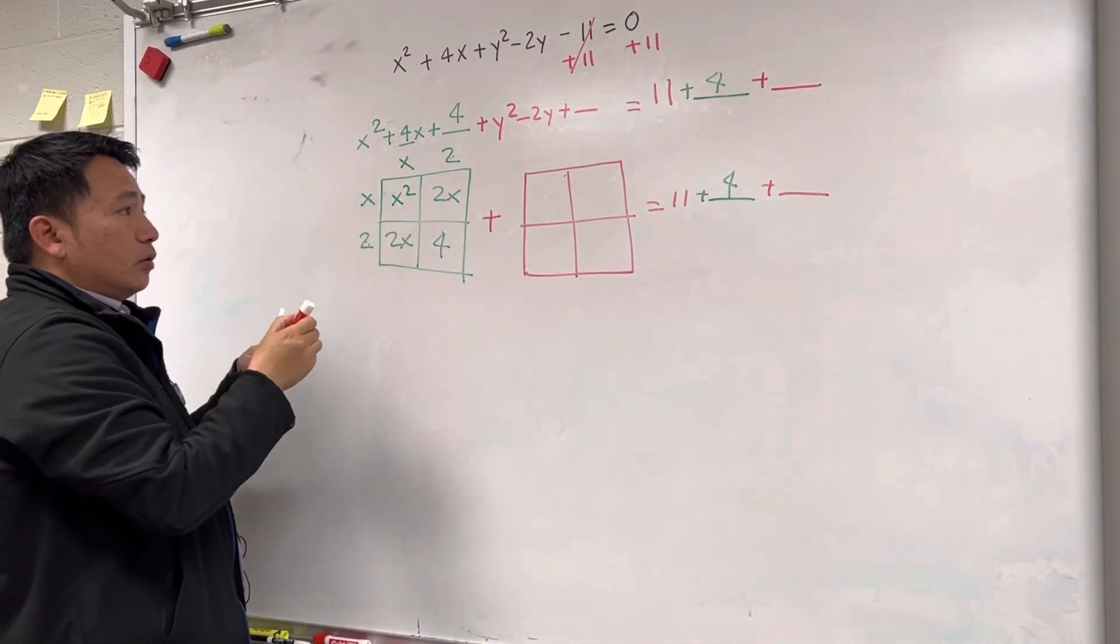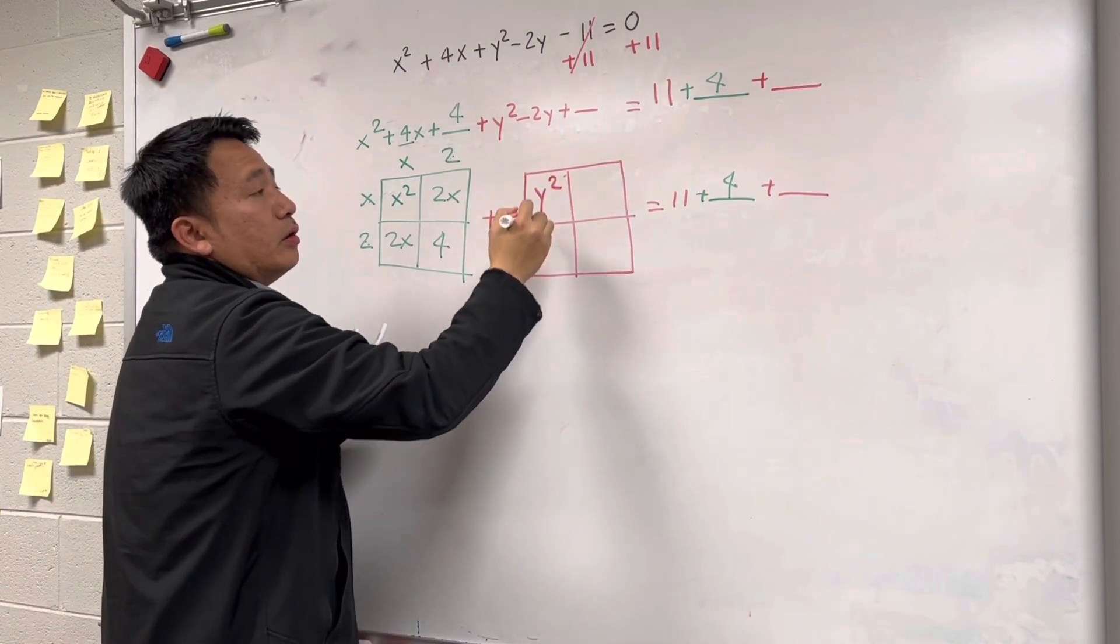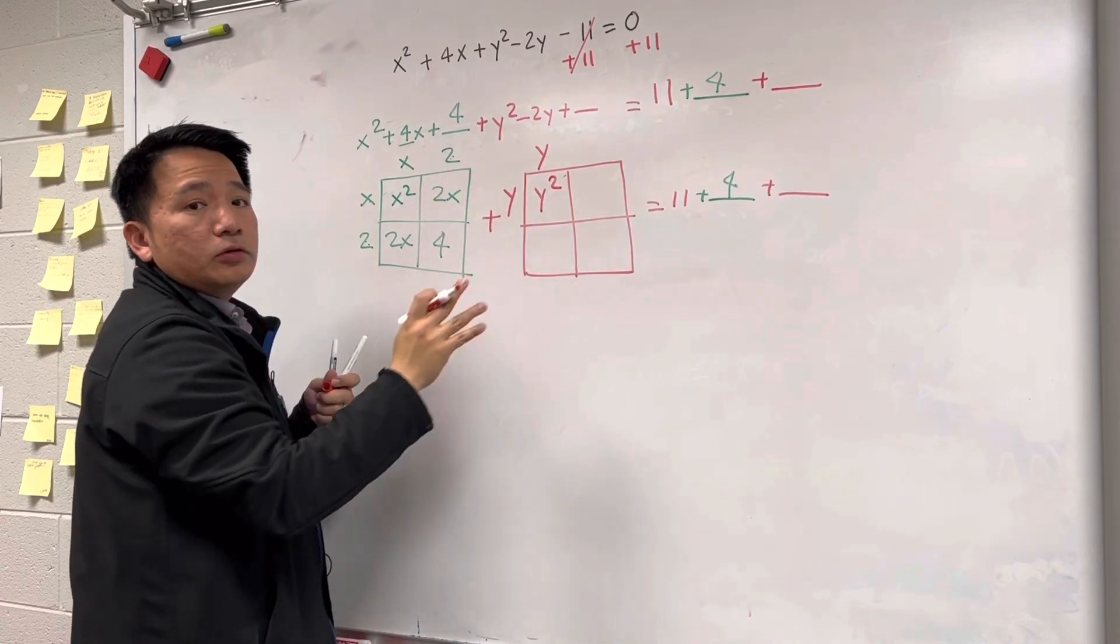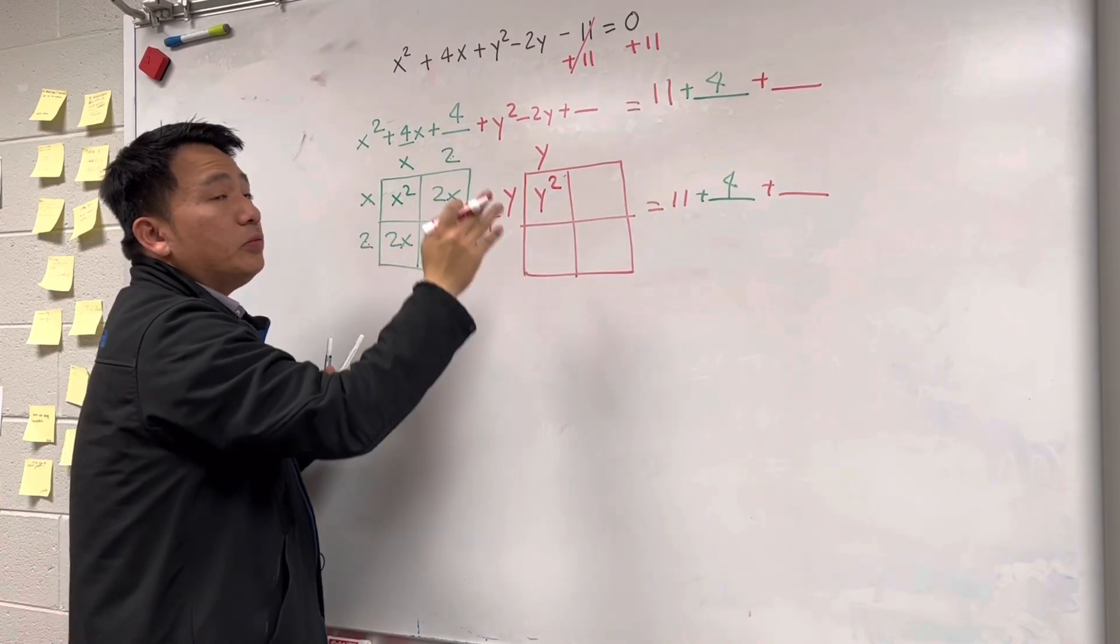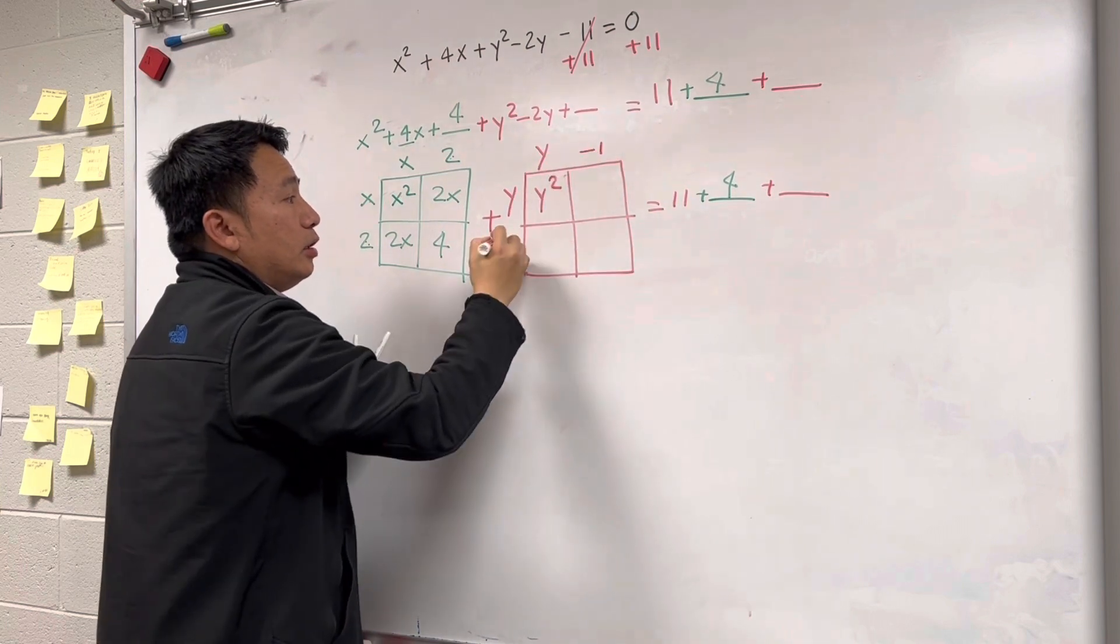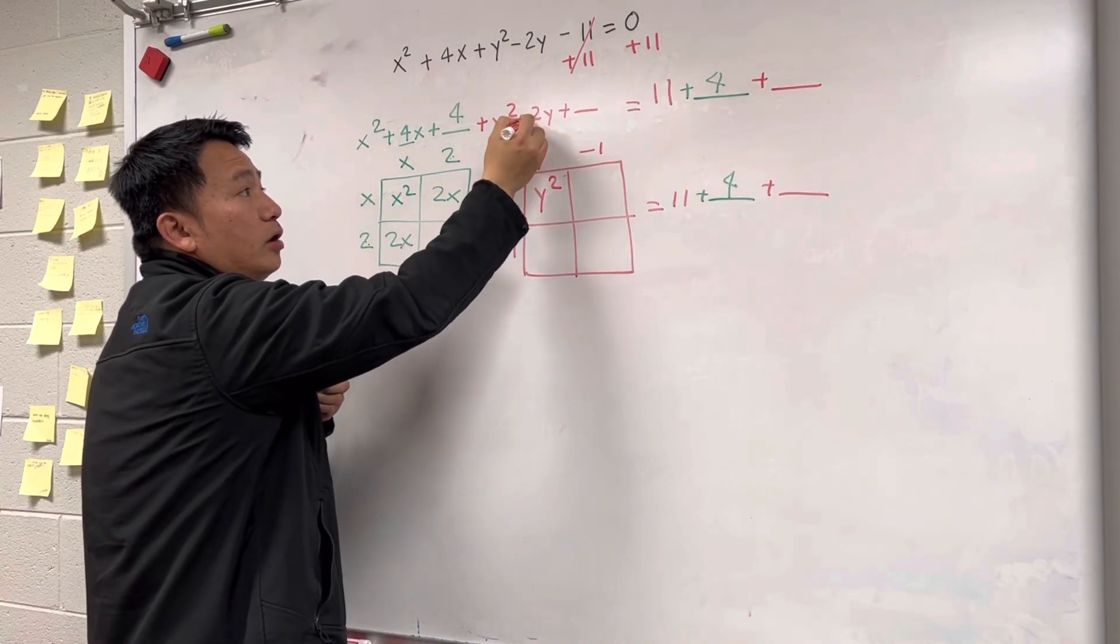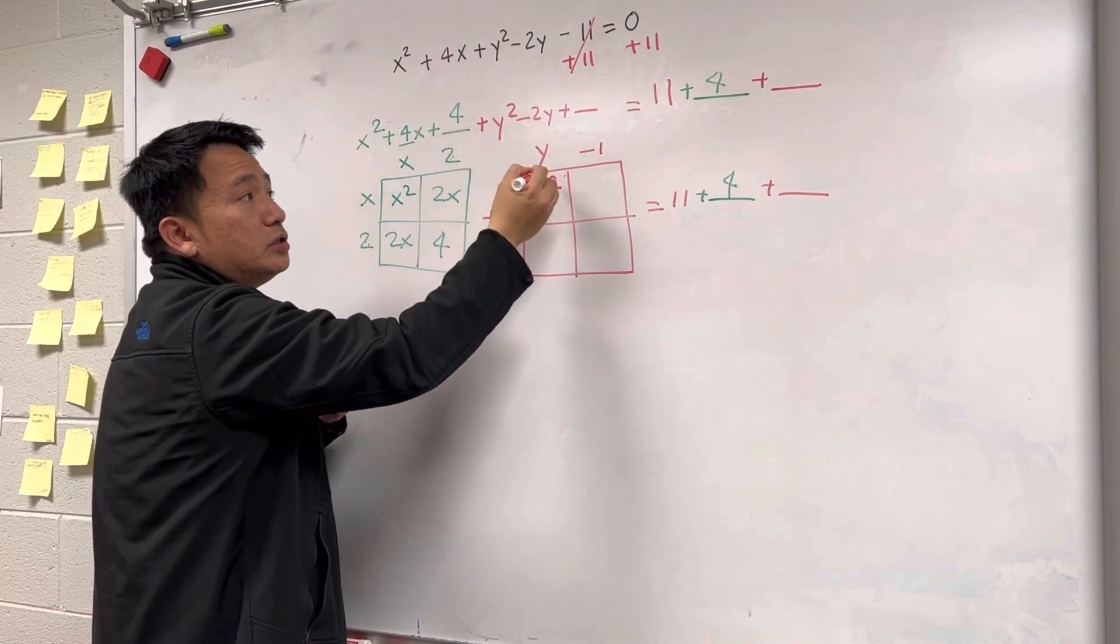And then y squared right here. Okay, y times y is y squared. So can you think of two numbers exactly the same? When they add, they give you negative 2, negative 1 and negative 1. The shortcut is you take the number in front of y or x divided by 2.